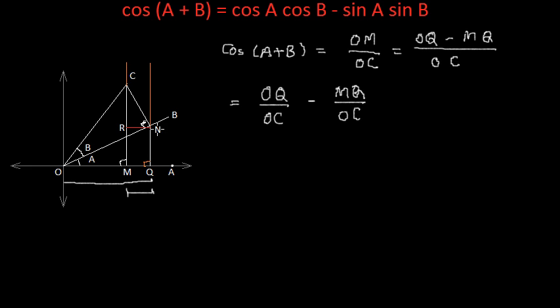This MQ is equal to RN, the opposite sides of a rectangle. So, this can be written as OQ by OC minus MQ I am writing as RN by OC. OQ is this length and this OC is this length. And if we talk about the individual triangles for angle A and angle B, OQ is actually a part of triangle OCN where we have the angle B and OQ is the part of this triangle where we have angle A.